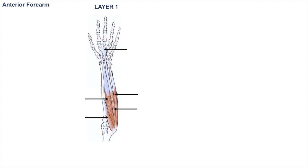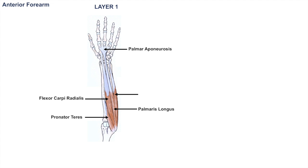If you think about looking at your left arm, this is a representation of your left arm as if you're looking at it. There are four muscles to remember in layer one, the most superficial layer. From left to right, those muscles are: pronator teres; flexor carpi radialis, because it's along the radius; palmaris longus, which is the longest and has the longest tendon. The palmaris longus actually leads to an aponeurosis at the palm, so it's easy to remember as well.